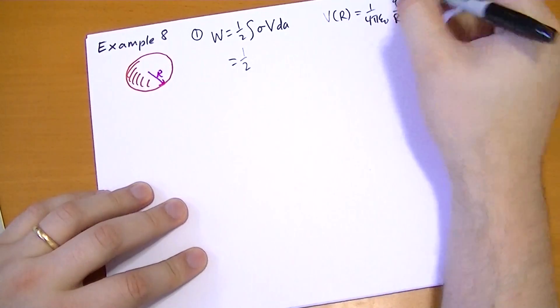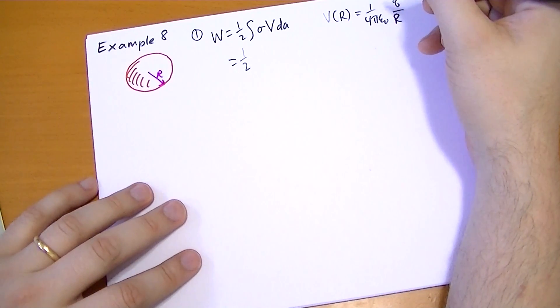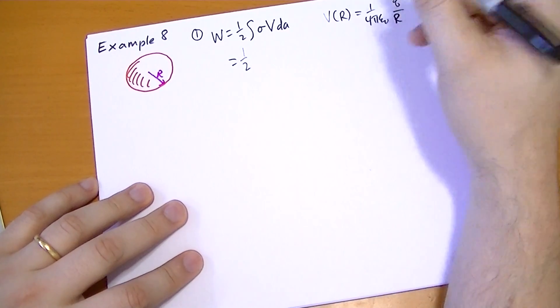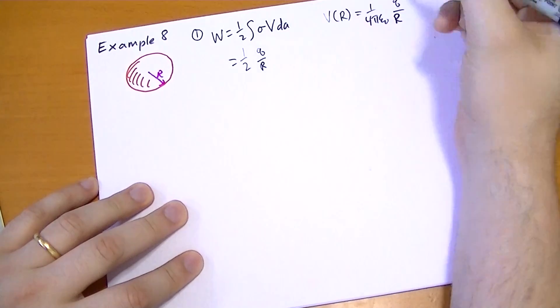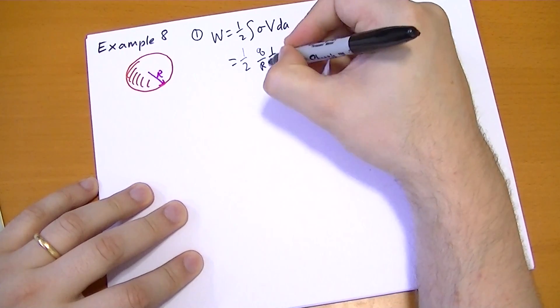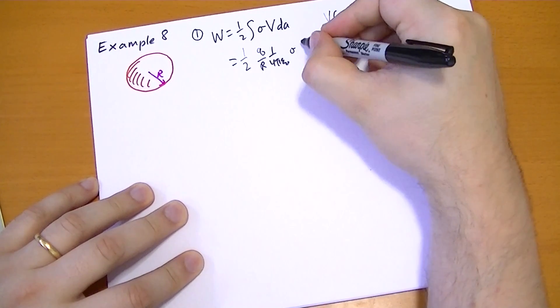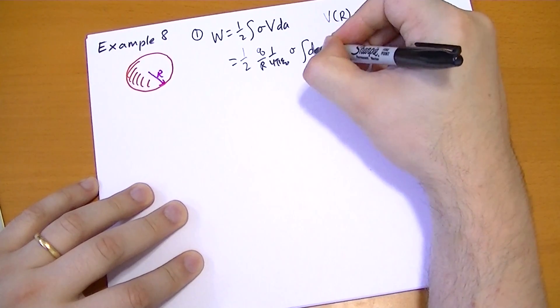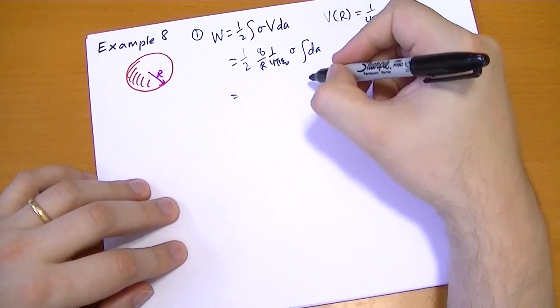So all those are constants. Sigma hangs out in the middle there. So we have Q over R, 4 pi epsilon naught, and our sigma is going to hang out there, and now we have the integral of the surface area. What's the surface area of a sphere? 4 pi R squared.